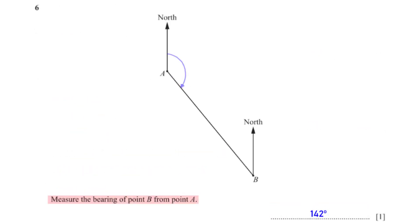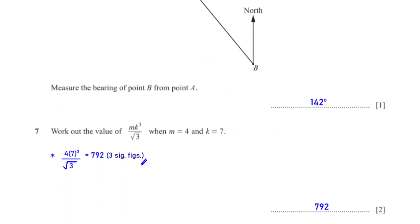Measure the bearing of point B from point A. On the diagram we've marked the bearing of point B from point A using a protractor. When we measure this angle we get 142 degrees.